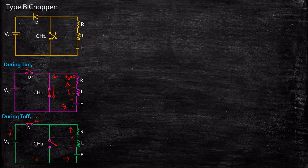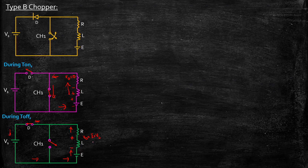So basically, the load is supplying the current. That is, it's not only through the inductor, it's also because of the back EMF. So the inductor reverses its polarity, but you have to carefully observe that the back EMF is also supplying power to the load. So over here, what will be the output voltage Vout? Vout is nothing but E plus VL, that is the back EMF plus the voltage across the inductor. So Vout is equal to E plus VL. And the current is in the reverse direction over here. Very important observation.